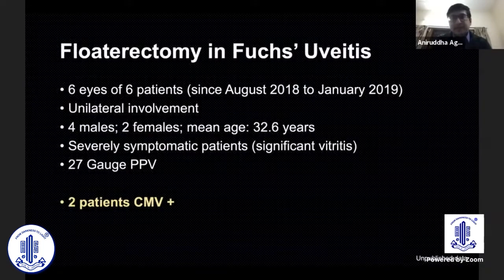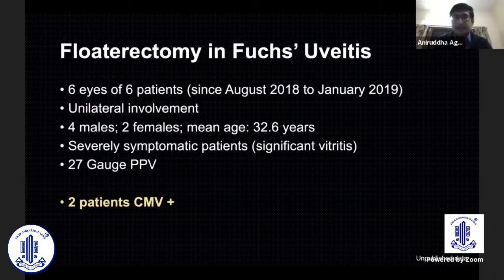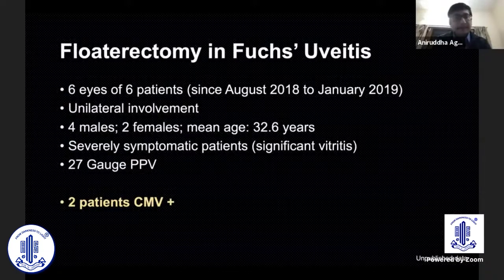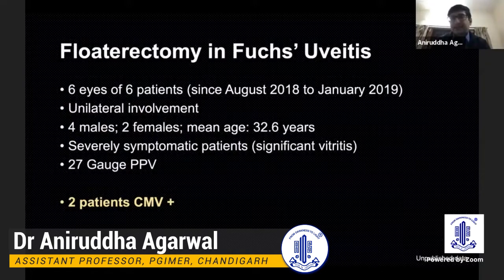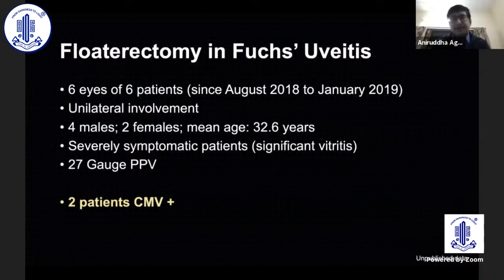Some Fuchs patients come with complaints of persistent floaters. One option is floaterectomy, though the patient must understand the underlying risks of surgical intervention. When severe floaters and vitritis are present, these patients may benefit from floaterectomy. In our PGI experience of six patients using 27-gauge vitrectomy, what was interesting is that while Fuchs is strongly associated with rubella in the literature, we had two patients who were CMV PCR positive and ultimately required treatment. In Singapore, China, and Japan, Fuchs has been shown to be CMV-related by Sun Feik Chi's group.